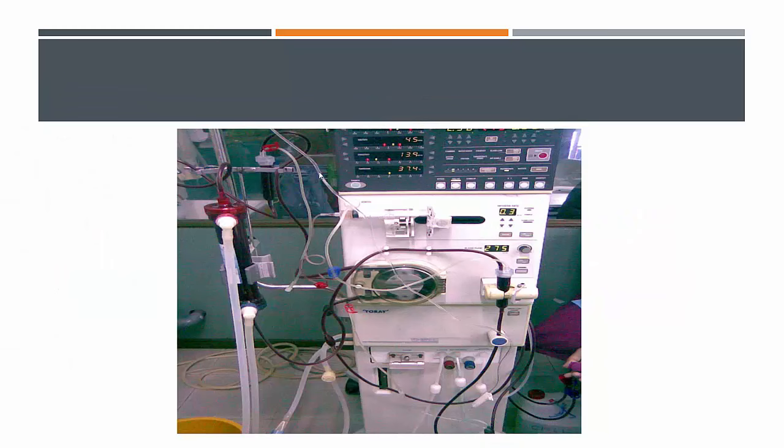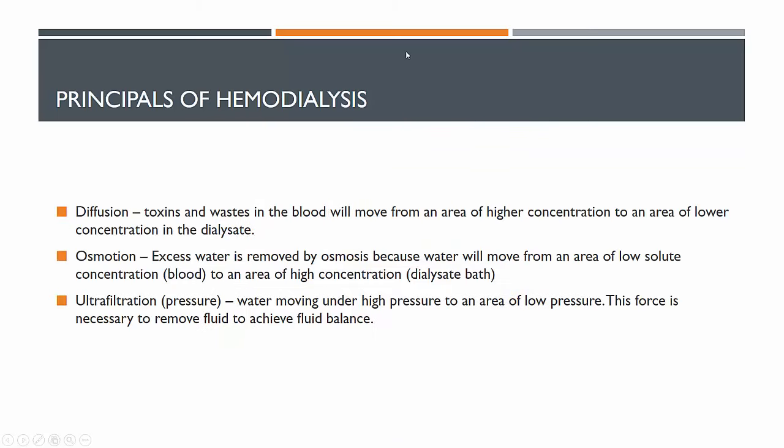Here's what one of them looks like in real life — you can see the machine and the dialyzer. The system functions on a couple of principles. The first is diffusion: toxins and wastes move from an area of high concentration to an area of low concentration in the dialysate.